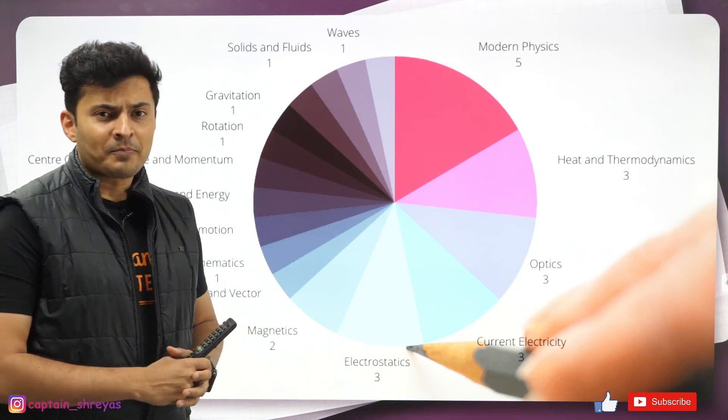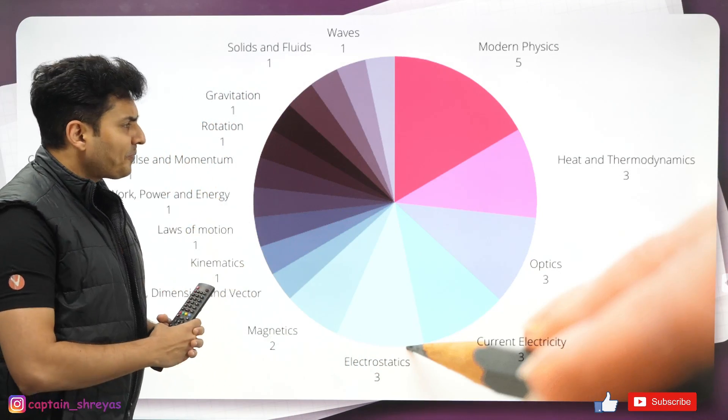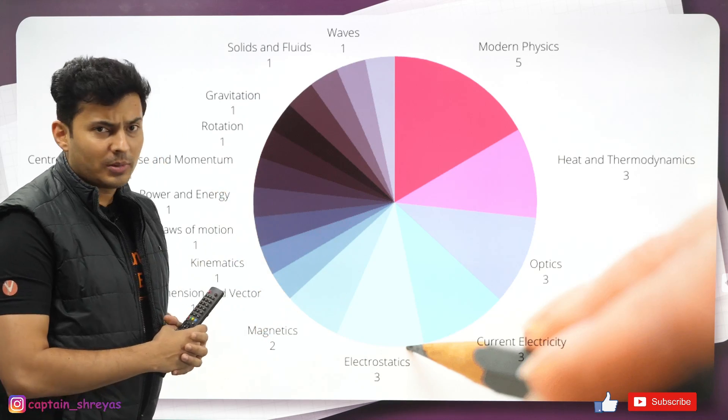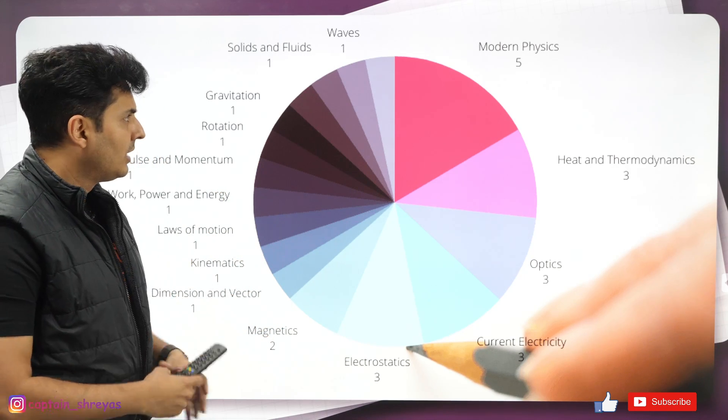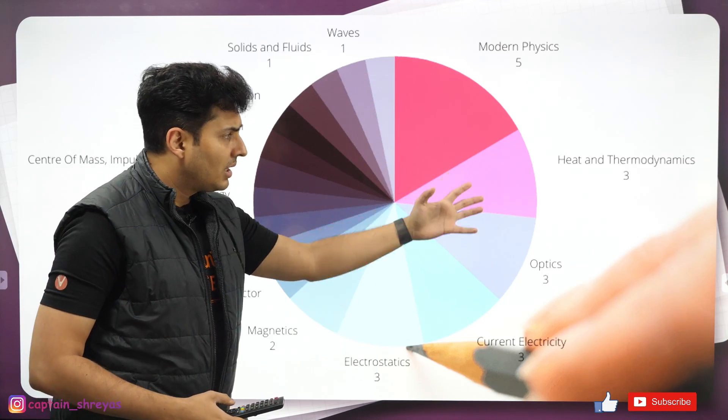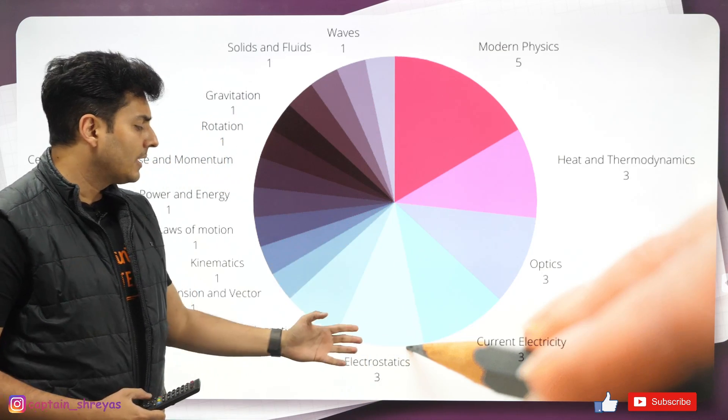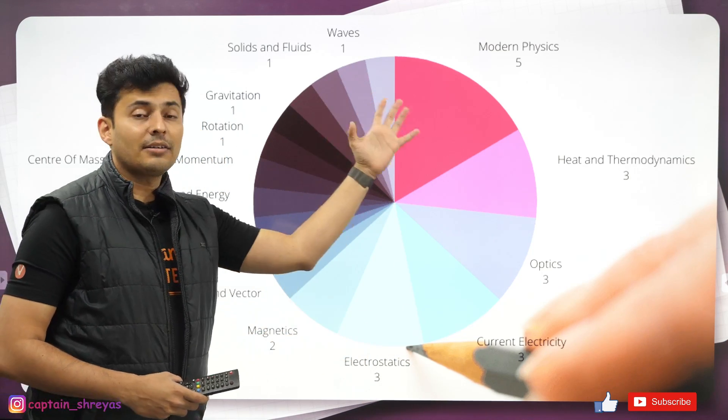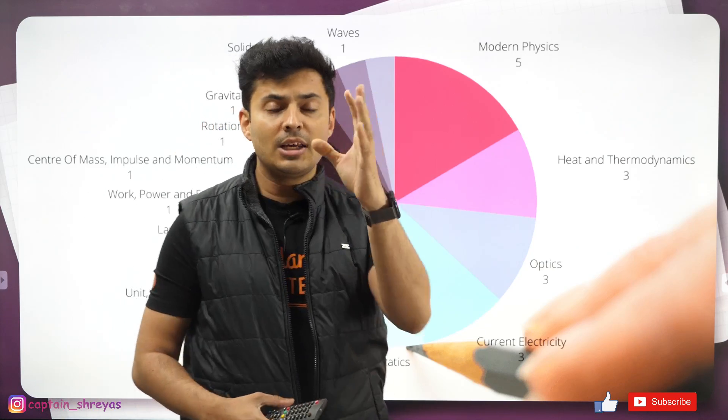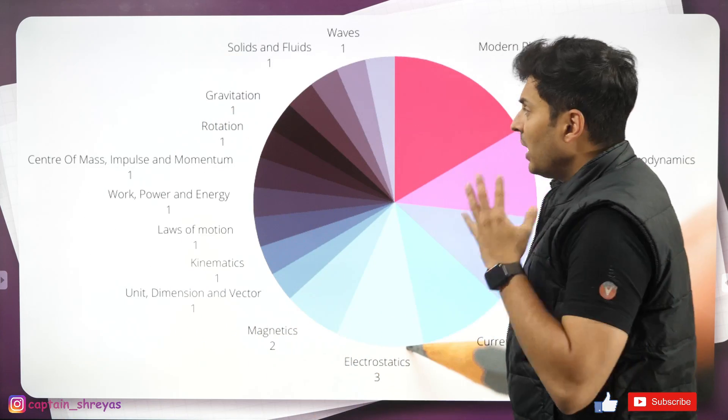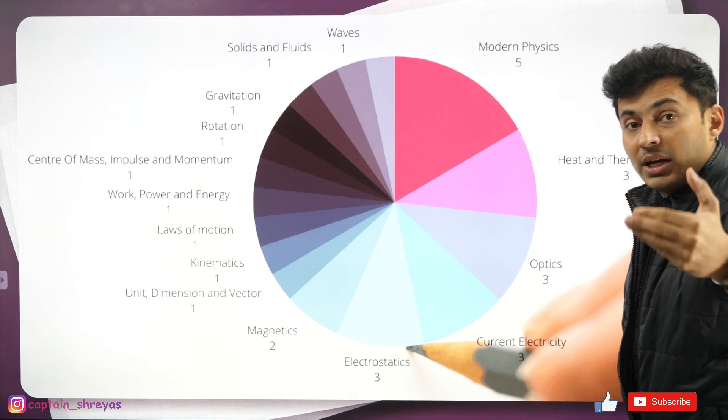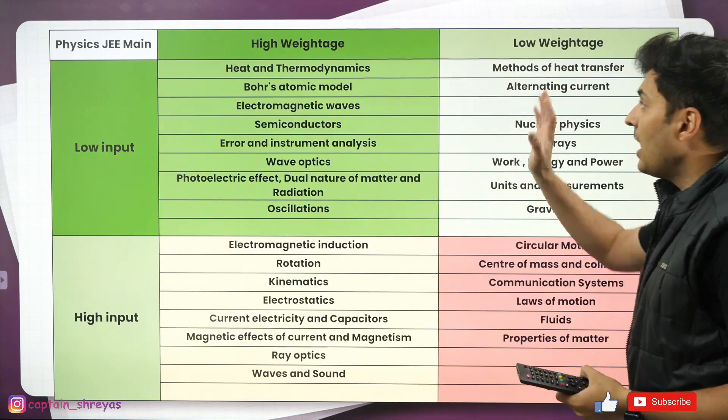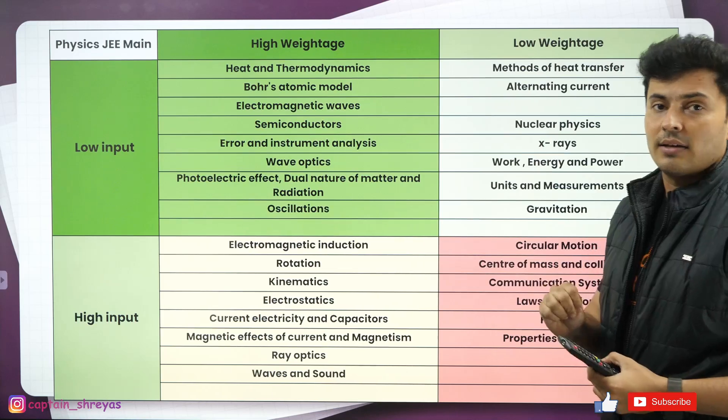So let's talk about the entire weightage of all the topics, especially in physics and then I'm going to go to chemistry and maths as well. So you can see modern physics, heat and thermo, optics, current electricity and electrostatics. These are the heavyweights in your JE Mains physics. But does it mean that you have to study all these topics? No, there is a particular order and for that I have divided all the topics in four categories.